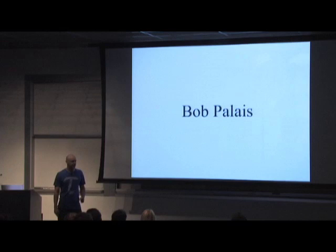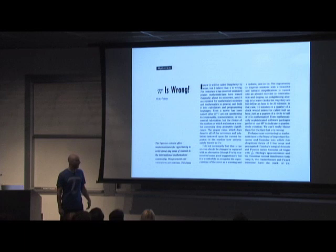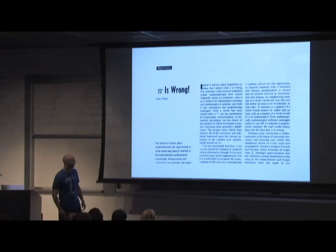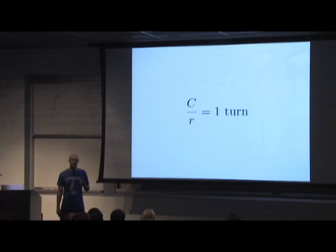I want to give some background about this project. I want to first talk about a mathematician named Bob Palais. In 2001, Bob wrote an article called 'Pi is Wrong,' published in the Mathematical Intelligencer. I don't remember quite how deep my suspicions about pi ran before I read this article, but this was an eye-opener. I read it — it's just a couple of pages — and said, he's right, there's no question. More than any single person, Bob Palais deserves credit for bringing this issue to a broad audience.